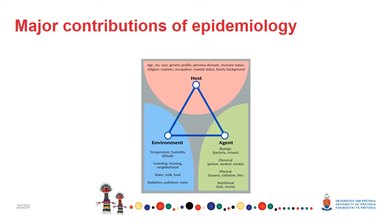Epidemiology has a long tradition and has created a wealth of accumulated experience to assess micro-environments and specific agents that may impact health. There are different types of interventions tackling all three elements of the triangle. One can work with hosts and improve their immune system, increase their knowledge and motivate behavioral change to make the hosts more resistant to agents.